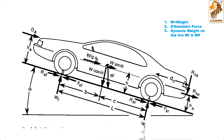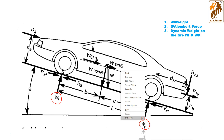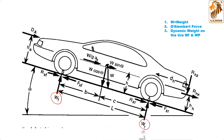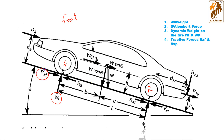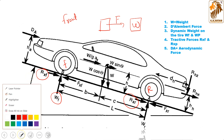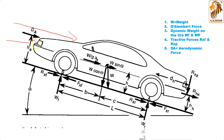Next are the dynamic weights on the tires, Wf and Wr, which denote the weight at the front tire and the weight at the rear tire — these are the weight reactions at both tires. Then we have the tractive forces, Rxf and Rxr, which are derived from the engine. The engine gives power to the wheels, so this force is known as the tractive force.